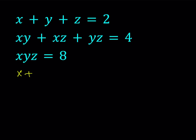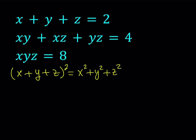I'd like to take x plus y plus z and square it. My goal is to get x squared plus y squared plus z squared. When you square 2, you're going to get 4.